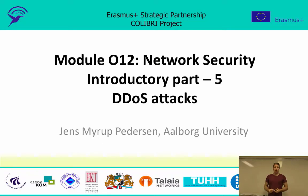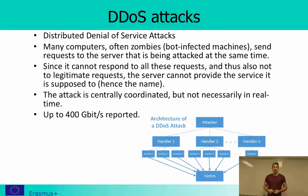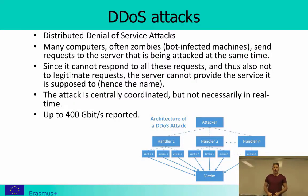Welcome to network security introduction part 5, where I will be talking about DDoS attacks, or distributed denial of service attacks. As the name indicates, it is a denial of service attack, meaning that we leave the attack target unable to perform the duties it would normally perform. This is most often done by sending a lot of requests from all over the world simultaneously — hence 'distributed.'